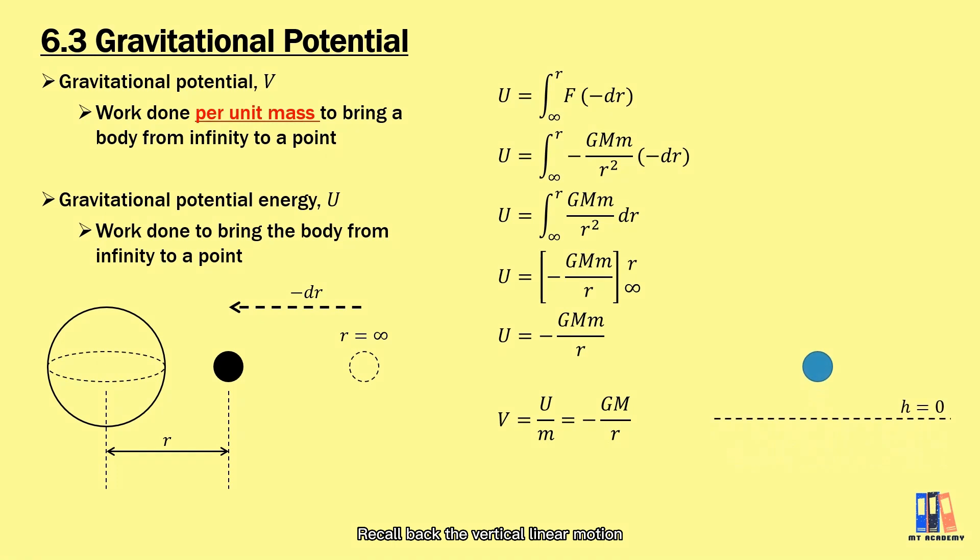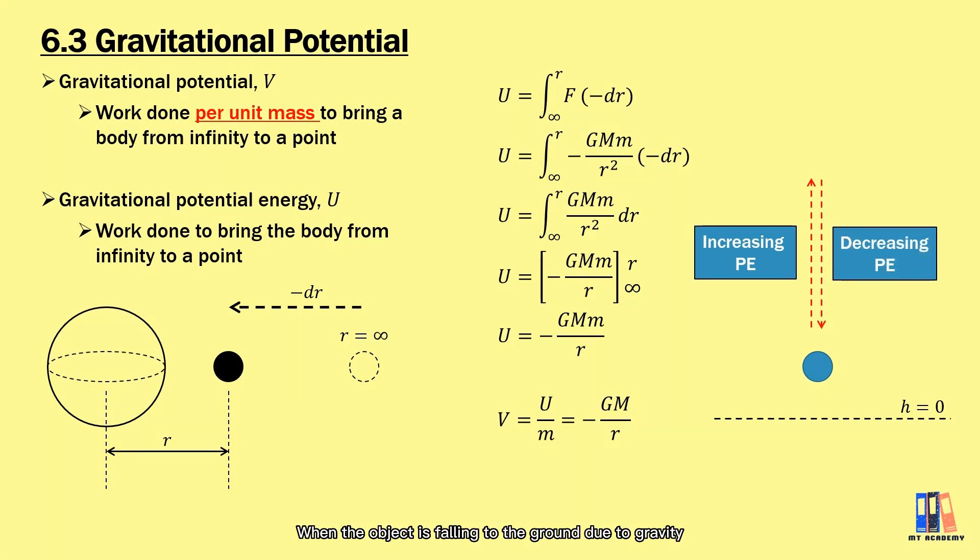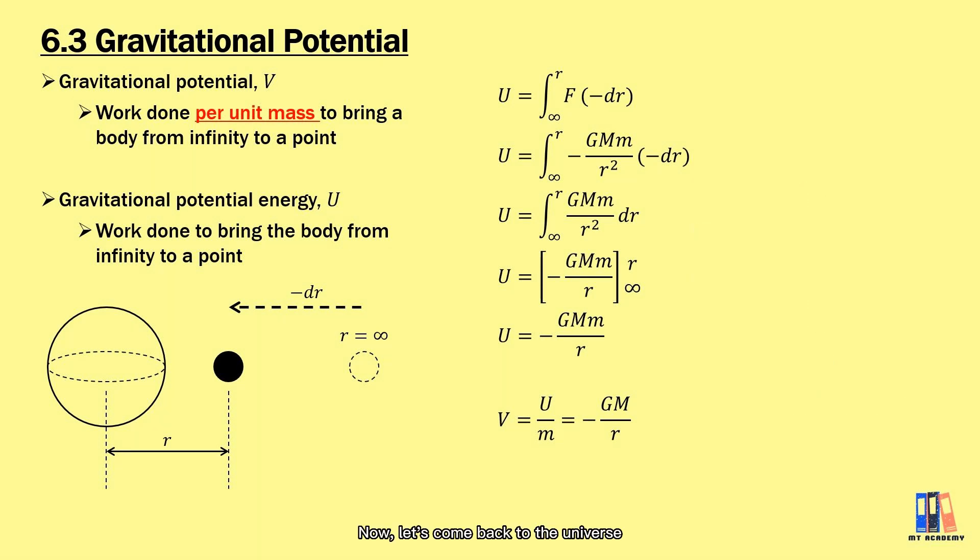We can see both U and V have negative signs, and this is because the work is done by the Earth. Recall the vertical linear motion you learned in Chapter 2. When you throw something upwards, the kinetic energy is converted into potential energy. In other words, when the object is leaving the Earth, it has increasing potential energy. When the object is falling to the ground due to gravity, the potential energy is decreasing.